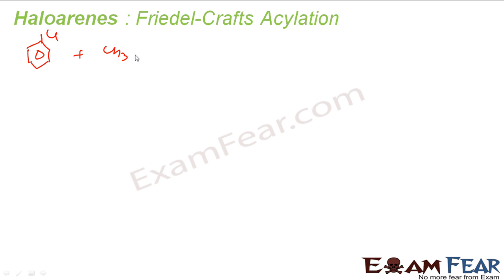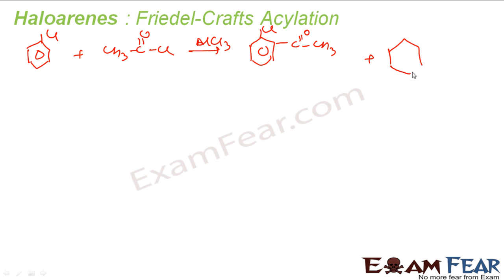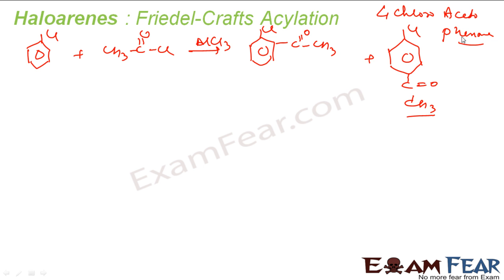Now let us talk about Friedel-Crafts acylation reaction — almost similar to Friedel-Crafts alkylation reaction. The only difference here is that instead of using CH3Cl, we use RCOCl here. We also use AlCl3. What you get is an acyl group added at the para position. The major product is 4-chloroacetophenone. This is the Friedel-Crafts acylation reaction.